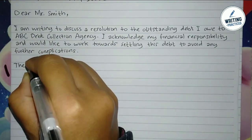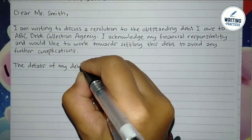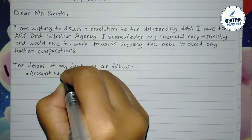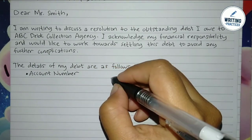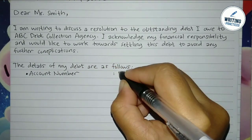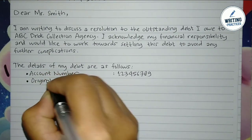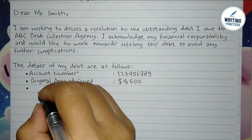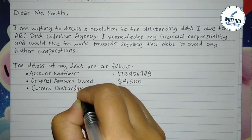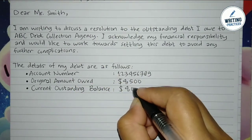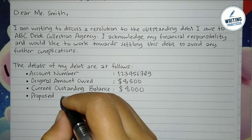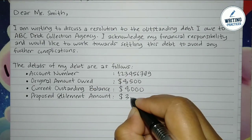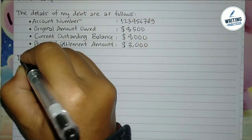In the second paragraph, this is where you write all the debt details — a recap of the debt including account number, original amount owed, current outstanding balance, and proposed settlement amount. In this example, the proposed settlement amount is three thousand dollars.